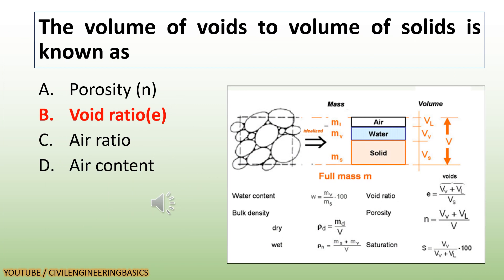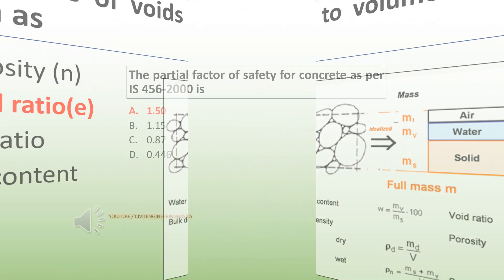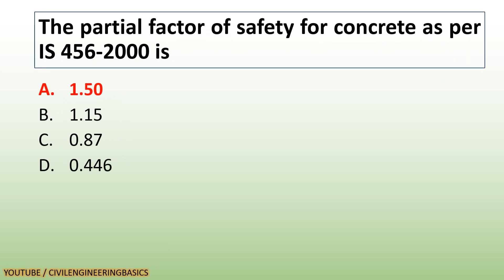The volume of voids to volume of solids is known as void ratio e. The partial factor of safety for concrete as per IS 456:2000 is 1.5.